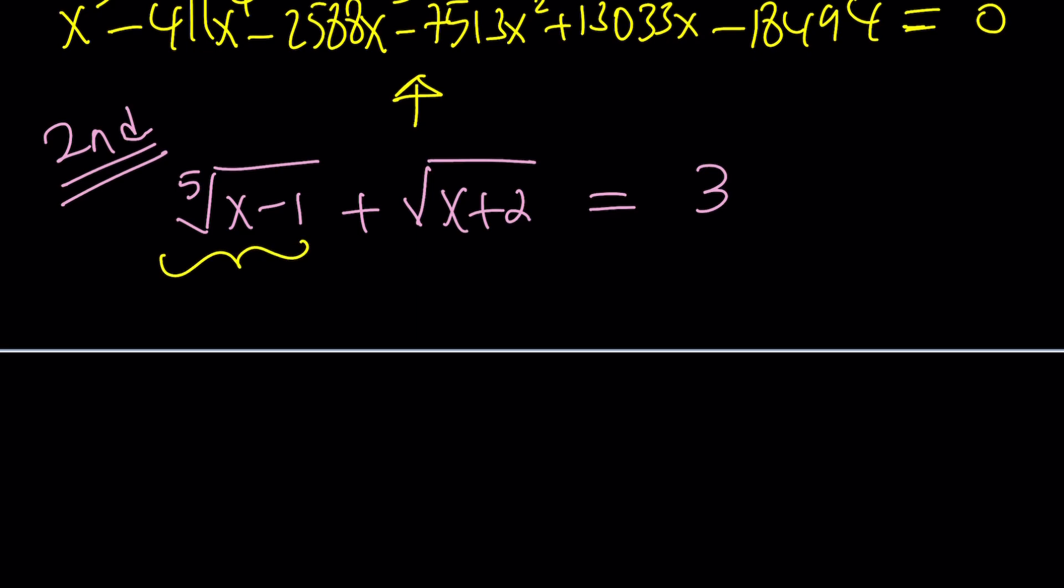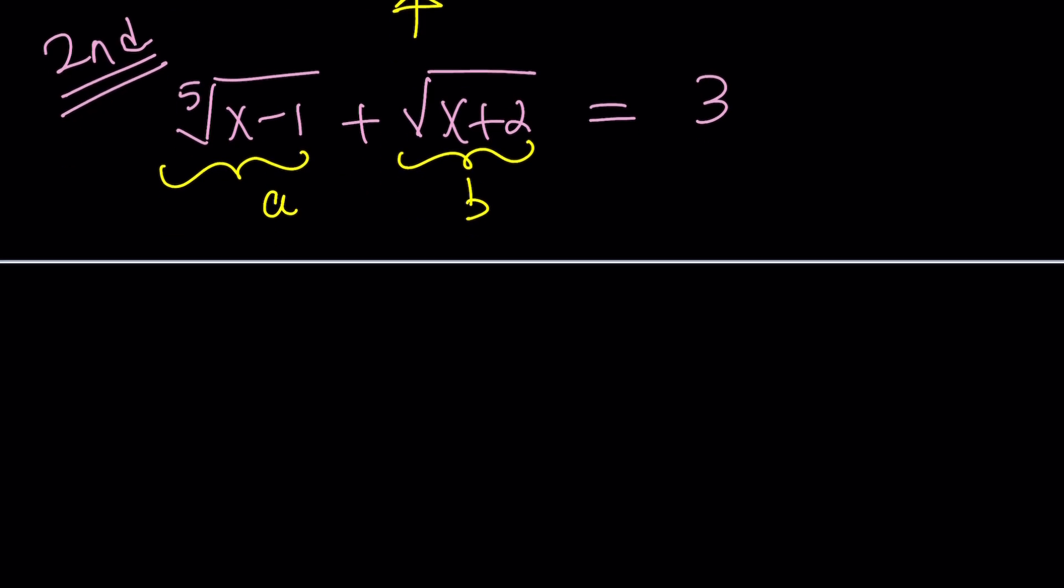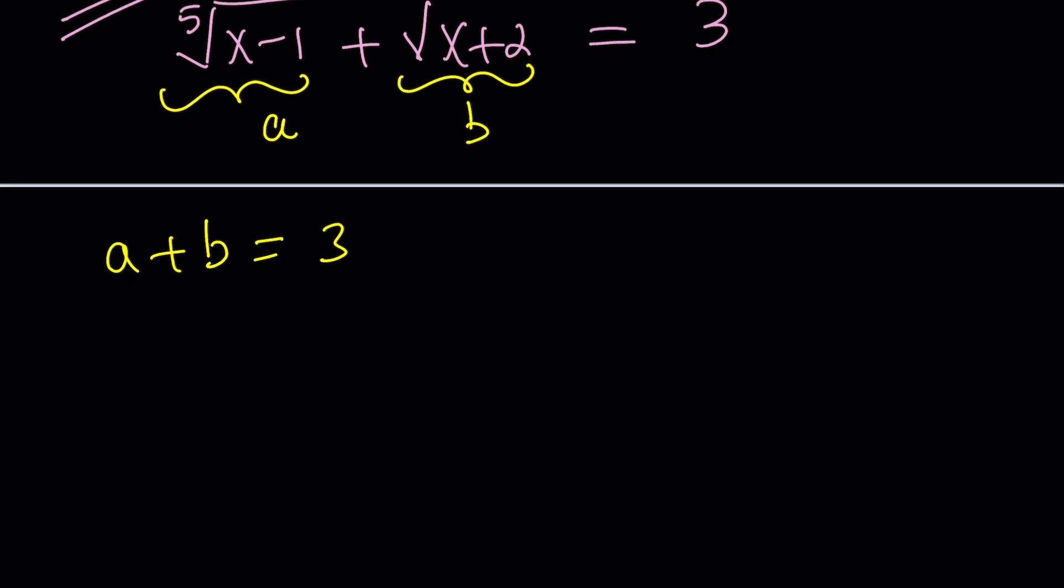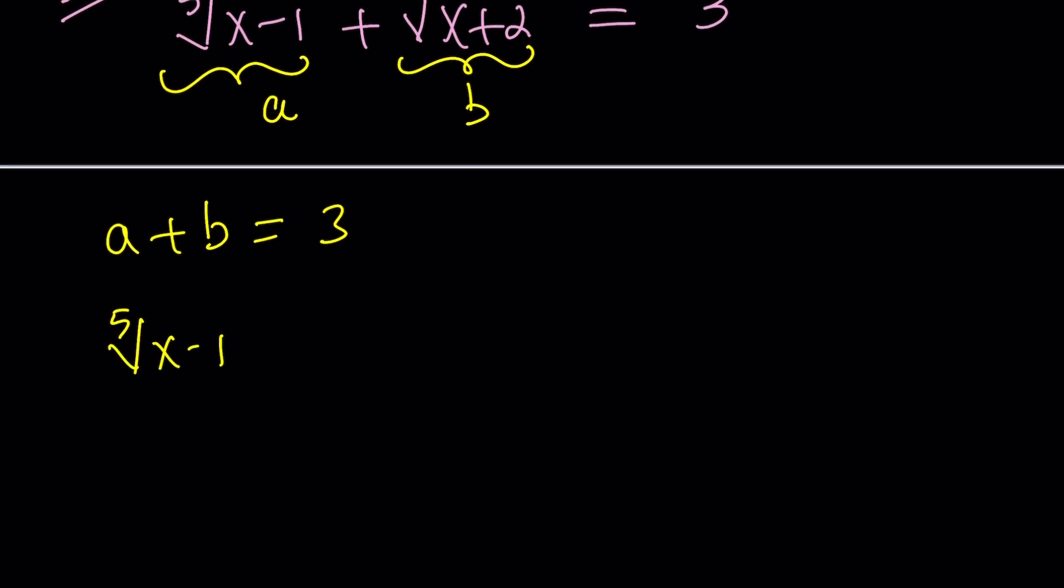We're going to use or take advantage of substitution. So I'm going to call this expression A along with the radical. And I'm going to call this B. That's called substitution. Well, why am I using two variables? Because that makes things a lot easier. So this gives us A plus B equals 3, which is so far so good. Now, notice what you did. The fifth root of X minus 1 was named A and the square root of X plus 2 was named B. And this implies, the first one implies X minus 1 is A to the fifth power, and the second one means X plus 2 is equal to B squared.